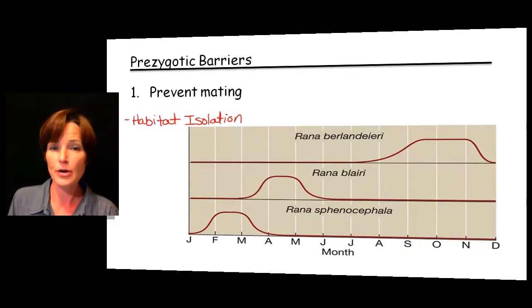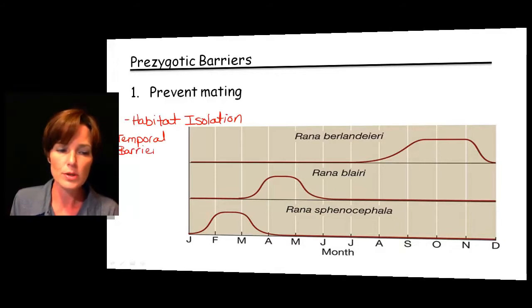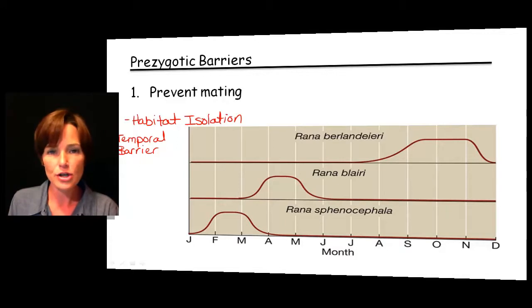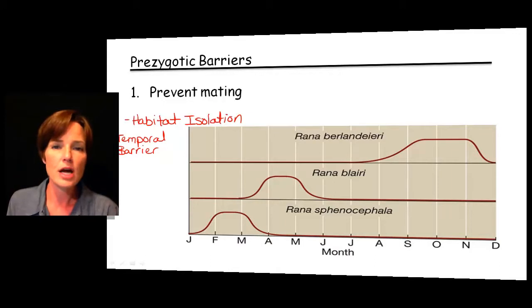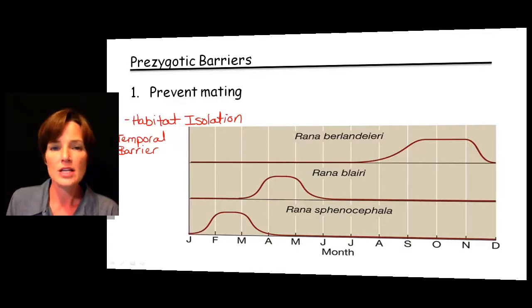Another type of prezygotic barrier is the temporal barrier. What we're saying is that these three species have mating that takes place at different times — shown here on a month chart covering all the months of the year. If the species prefer to mate at different times, it doesn't really matter if they're located in close proximity to each other or coming into contact on a daily basis. They're not ready to mate concurrently, so this is another way to isolate species from each other before mating even takes place.